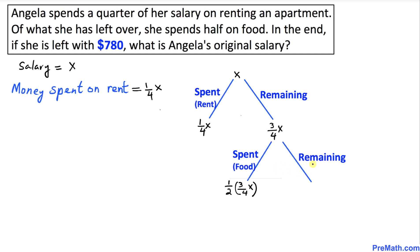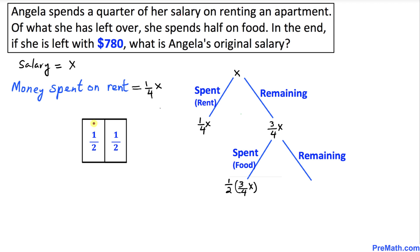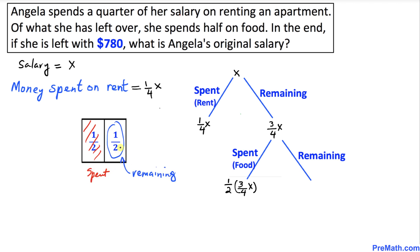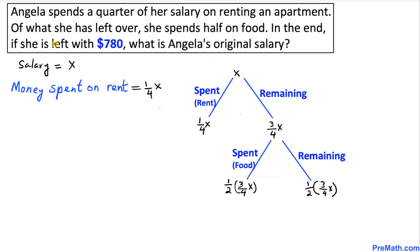Now we want to find the remaining part of the salary. From the visual chart, half of the remaining salary has been spent, so the remaining part is going to be one-half times three-fourths of X.